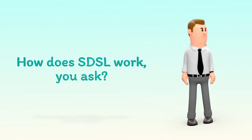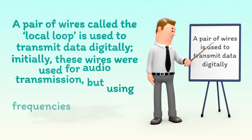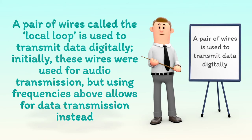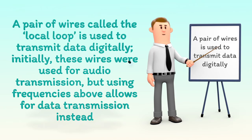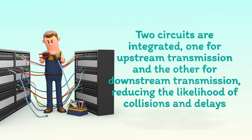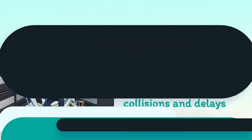How does SDSL work? A pair of wires called the local loop is used to transmit data digitally. Initially, these wires were used for audio transmission, but using frequencies above allows for data transmission instead. Two circuits are integrated — one for upstream transmission and the other for downstream transmission — reducing the likelihood of collisions and delays.